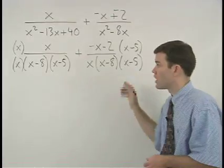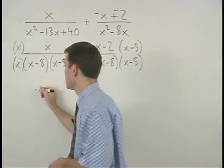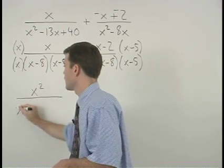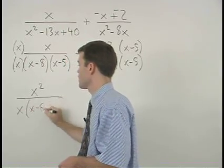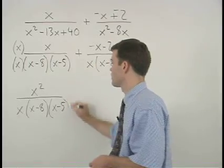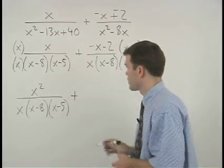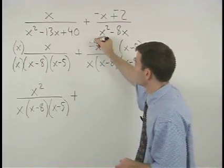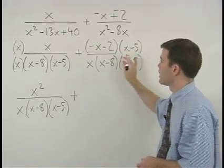Multiplying across the numerators we have x squared over x times x minus 8 times x minus 5. And notice that in the numerator of our second fraction we have a binomial times a binomial.